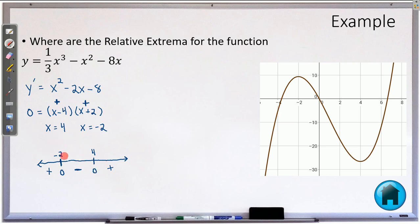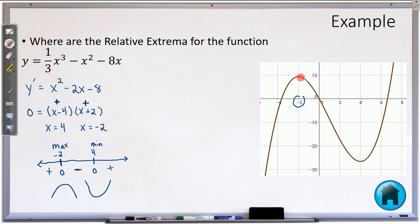Now we can determine what we have. At negative 2, the derivative is going from positive to negative, so that means we are increasing and then decreasing — negative 2 must be a max. At 4, we are going from negative to positive, which means decreasing to increasing — so 4 must be a min. As you can see on our graph, negative 2 is in fact a maximum and positive 4 is in fact a minimum. We are able to see the same behavior in the graph just through the numbers in the equation.